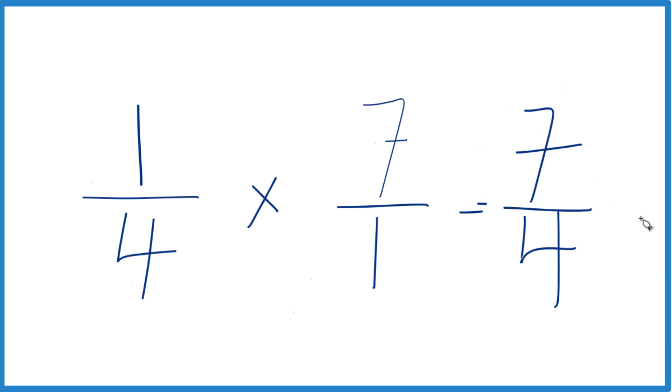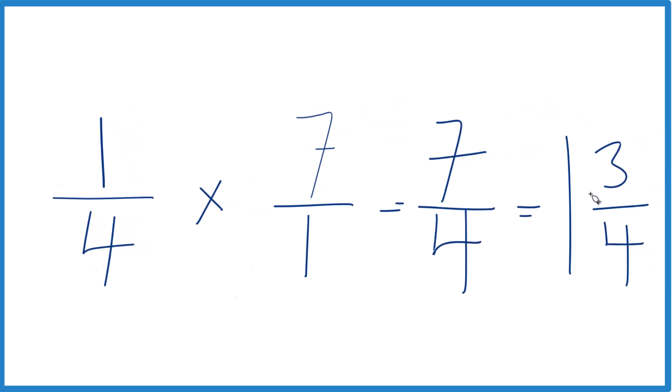So 4 goes into 7. 1 times 4, that's 4, and then we'd have 3 left over. Bring the 4 across, 1 and 3-fourths.